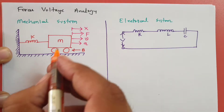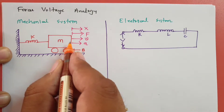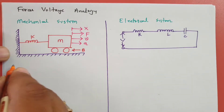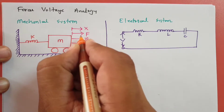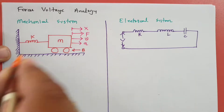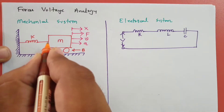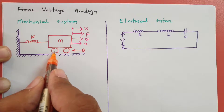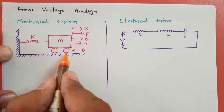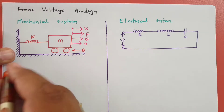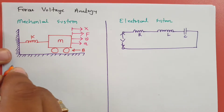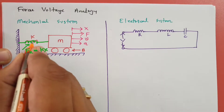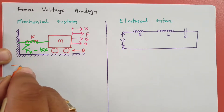First we will be making the differential equation of force for this mechanical system. Whatever force we apply will get distributed in the spring, in mass M, and in the damping constant B. Force in the spring is F_K = K × X.